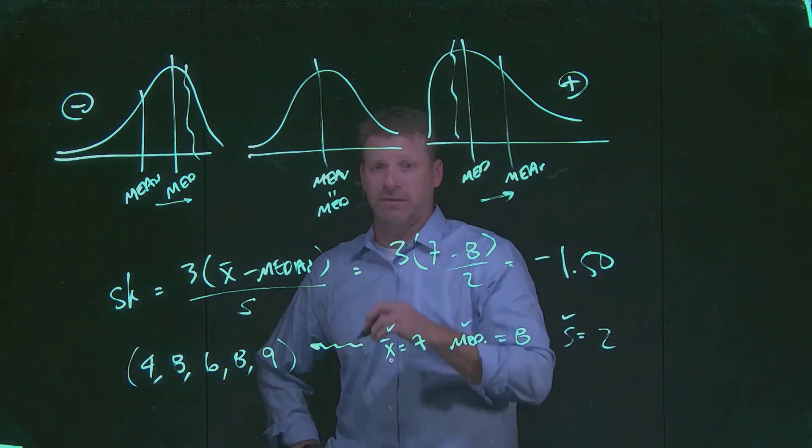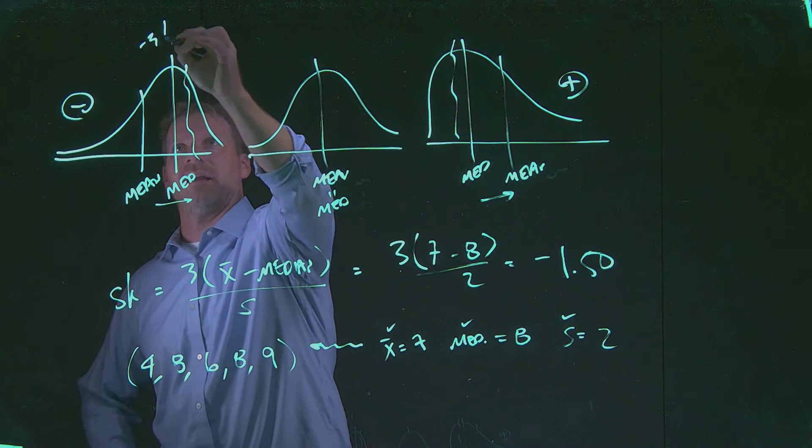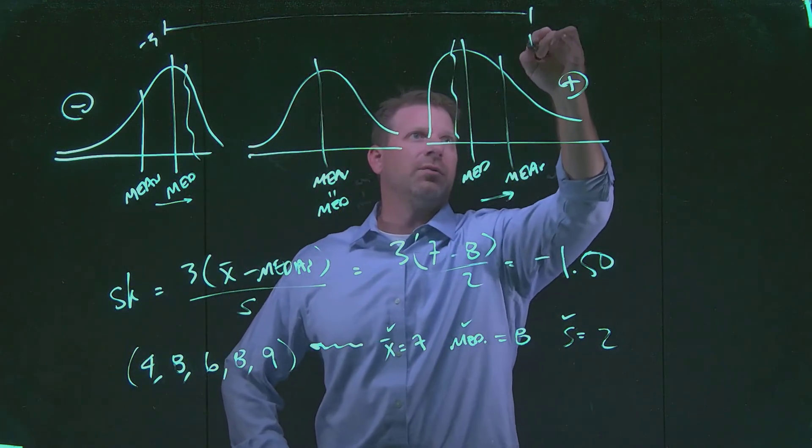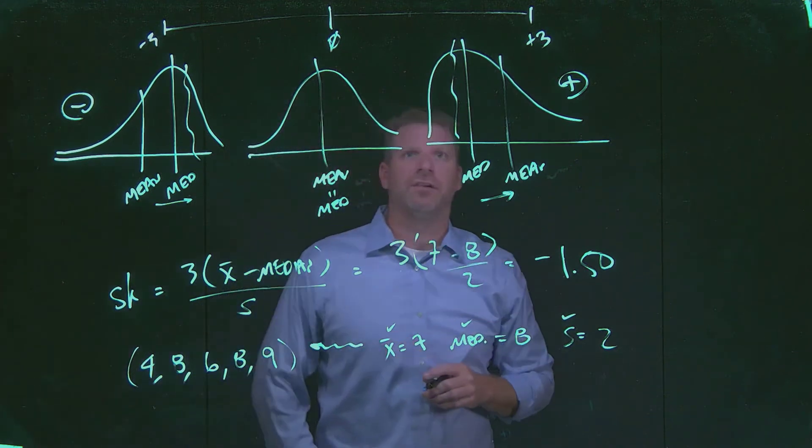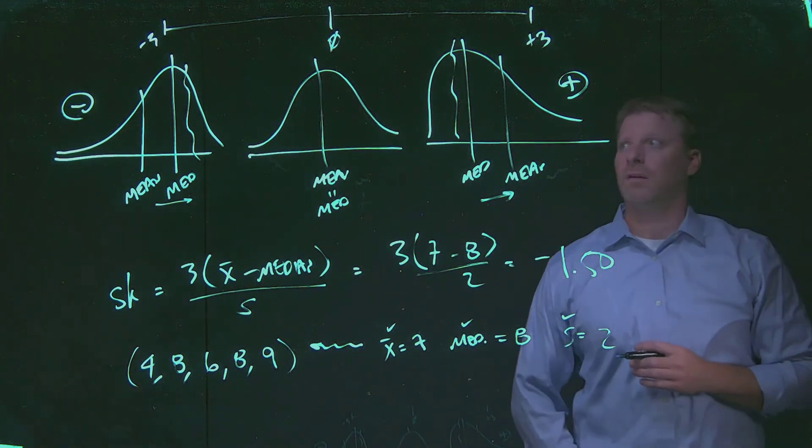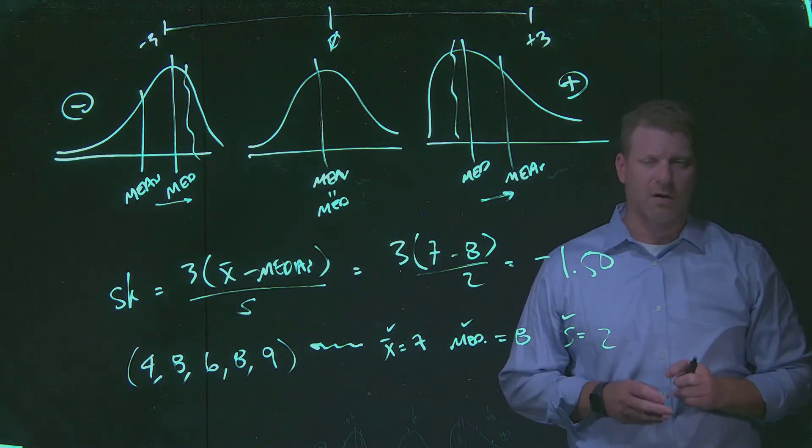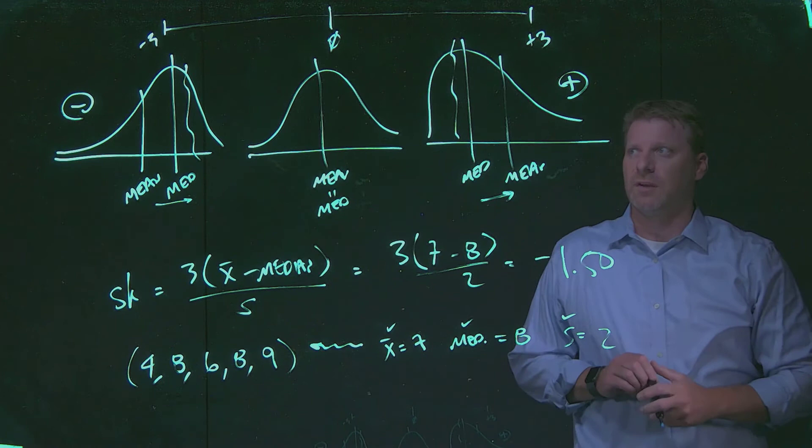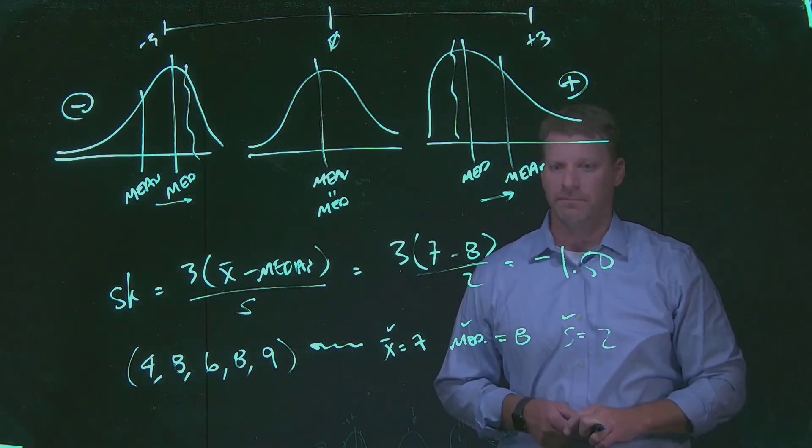One thing to point out with Pearson: Pearson's coefficient of skewness can only exist in an interval from negative 3 up to positive 3. A value close to or at 0 means that it's symmetrical. If you get anything above positive 3 or negative 3, you've done something wrong. We just mathematically with Pearson cannot exceed those ends of the interval.